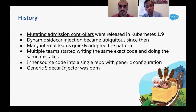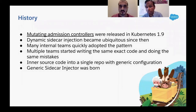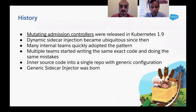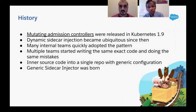Many of the infrastructure teams at Salesforce independently chose that pattern and started using it to dynamically inject sidecars into Kubernetes workloads. This worked well until we realized that each of the teams was writing the exact same source code, the same set of unit tests, same integration tests, producing the same Docker image, writing the same Helm charts, and debugging the same problems in the Kubernetes cluster. At that point we realized we should take a step back and see if we could derive a common pattern.